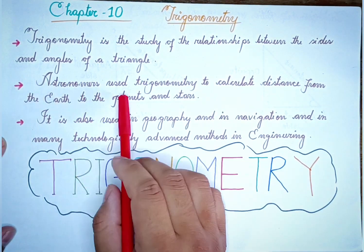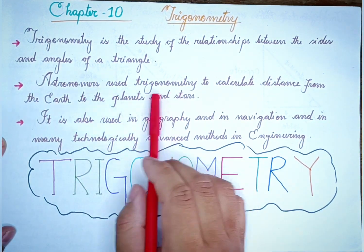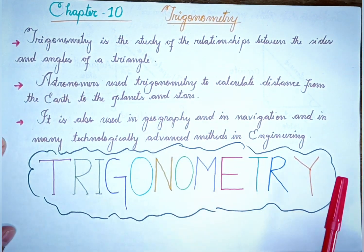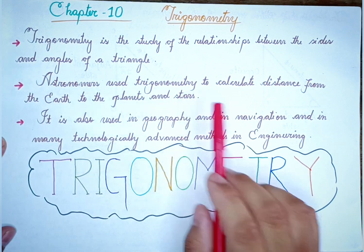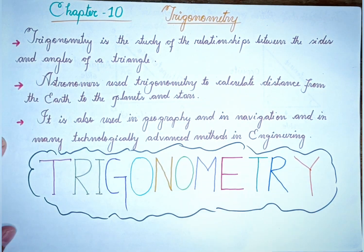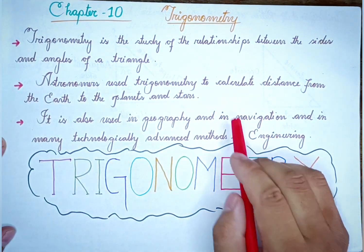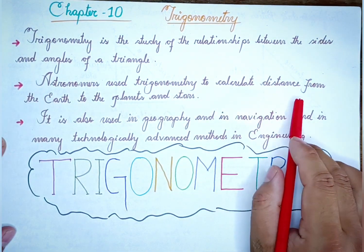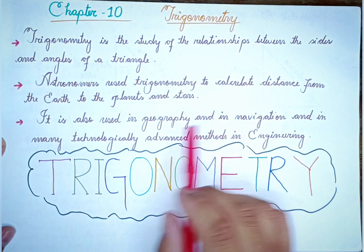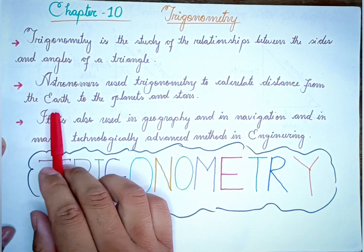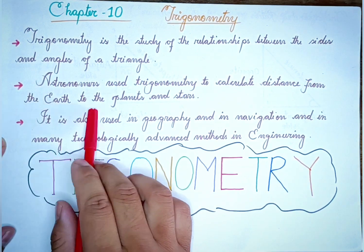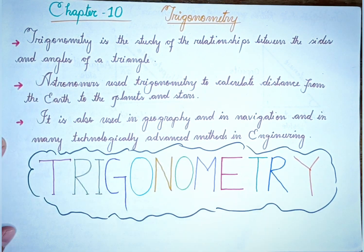Astronomers use trigonometry. The reason is to calculate the distance from the Earth to the planets and stars.